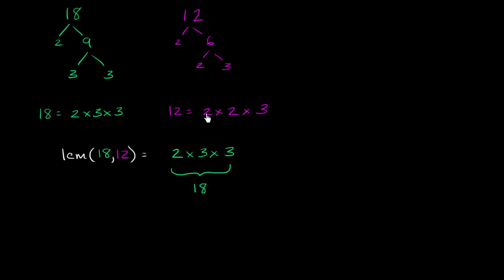And then let's see, 12 we need two 2's and a 3. Well, we already have one 3, so our 3 is taken care of. We have one 2, so this 2 is taken care of. But we don't have two 2's, so we need another 2 here.